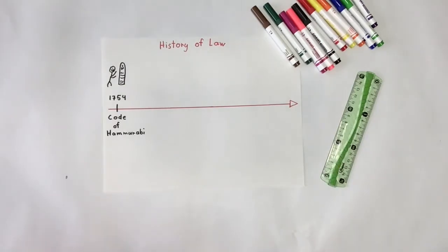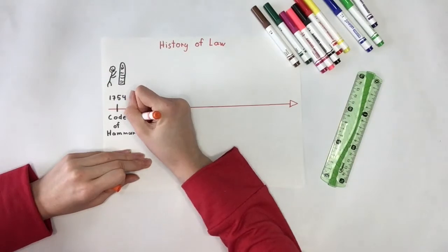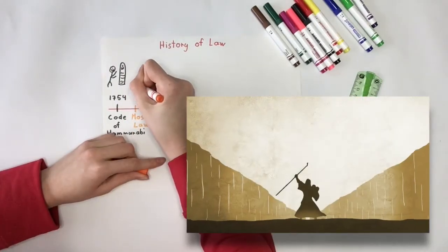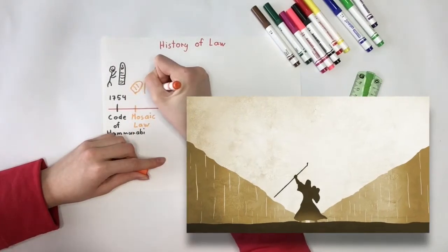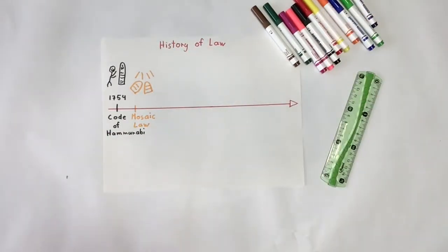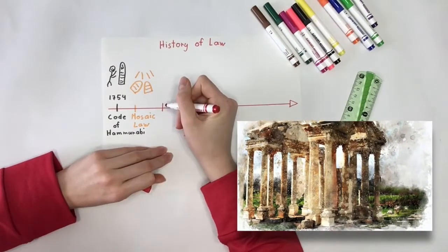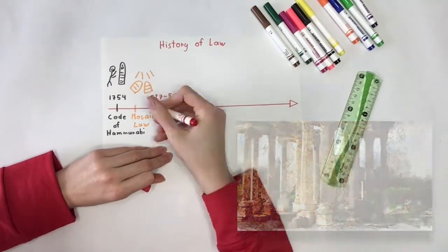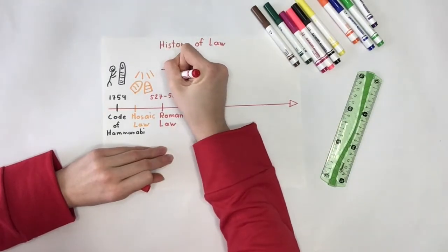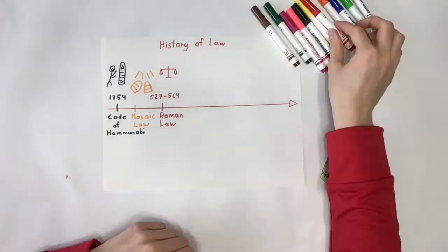The next detailed set of laws came quite a while later with the Mosaic Law, given to the Israelites while they wandered in the desert. This law was detailed, and many of the punishments were far harsher than what we would see in our legal system today. Sometime between 527 and 564, Emperor Justinian codified the Roman law. An important aspect of these laws was the idea of equity, which means being fair and impartial.